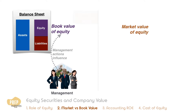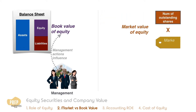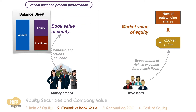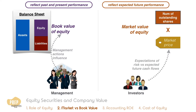The market value of equity, on the other hand, is the total value of a firm's outstanding equity shares based on market prices. Investors determine the market price based on their perceptions of the firm's risk and the expectations of future cash flows. So the book value of equity can be seen as a reflection of a firm's past and present performance, whereas the market value of equity reflects the market's consensus view of the firm's future performance.